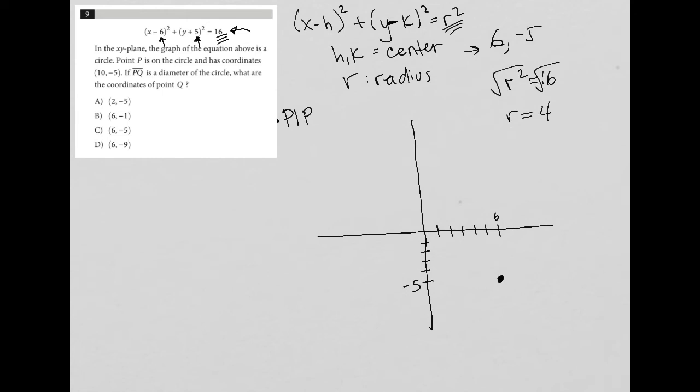My radius is 4. I go up 4 units vertically to 6, negative 1. If I go 4 units to the left, I'd be at 2, negative 5. If I go 4 units down, I'd be at 6, negative 9. And 4 units to the right, 7, 8, 9, 10, so 10, negative 5.